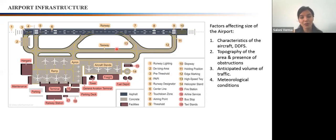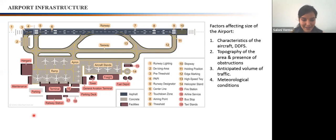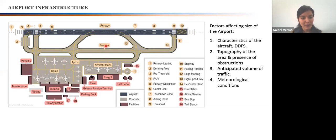When we talk about airport infrastructure, there are three segments: one is the land side, second is the terminal building, and third is the air side. Land side is the city side — where your roads are and you get into the airport premises. The terminal is in the middle, and everything beyond it — the apron, taxiway, runway, and stands — is the air side.